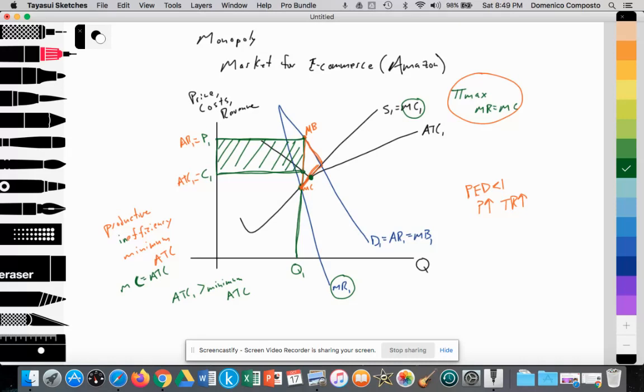In addition, let's talk about allocative efficiency. Allocative efficiency occurs where the marginal benefit equals the marginal cost, where basically demand equals supply.